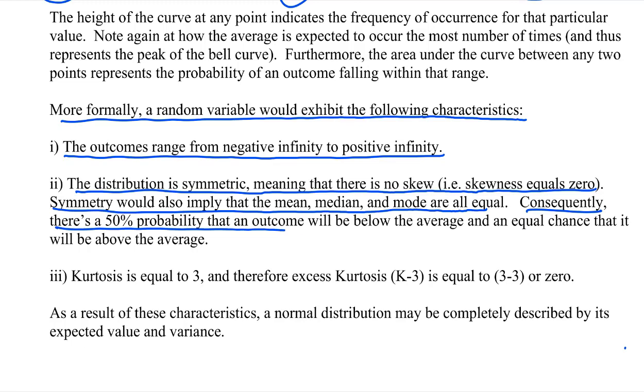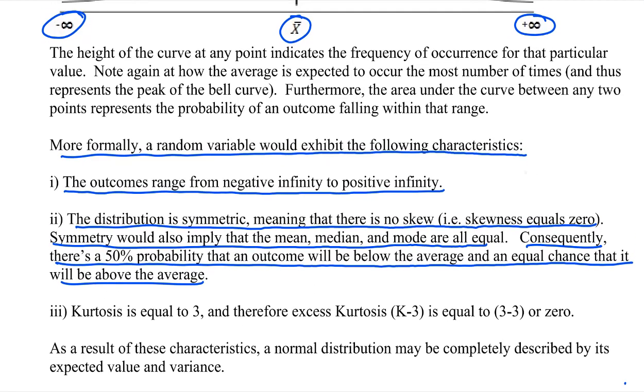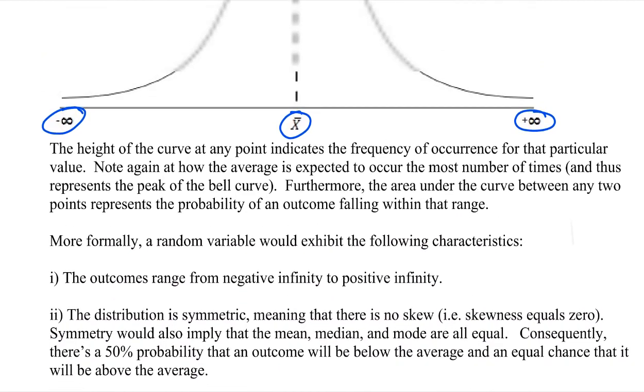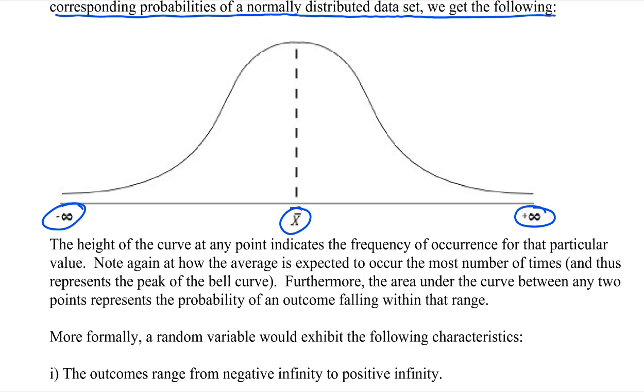Consequently, there's a 50% probability that an outcome will be below the average, and an equal chance that it will be above the average. Remember, we're talking about the probability as being equal to the area under the curve. So since it's symmetric, this half will have the same area as that half.